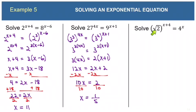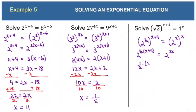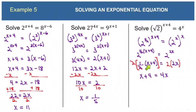This next one involves a square root: (√2)^(x+4) = 4^x. Both sides are powers of 2. √2 = 2^(1/2) and 4 = 2^2. So: (2^(1/2))^(x+4) = (2^2)^x, which gives 2^((x+4)/2) = 2^(2x). Setting exponents equal: (x+4)/2 = 2x. Multiplying both sides by 2: x + 4 = 4x. Subtracting x: 4 = 3x. Dividing by 3 gives x = 4/3.